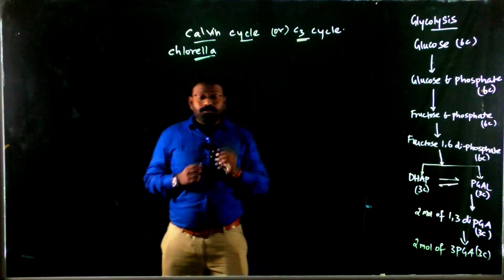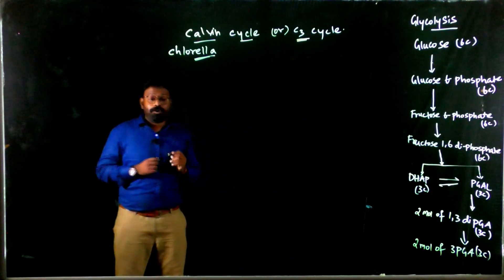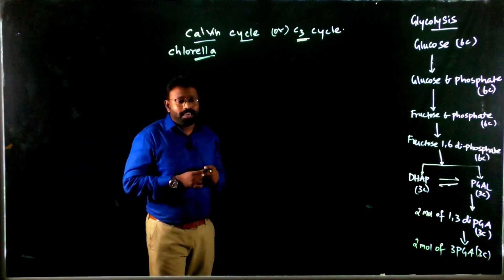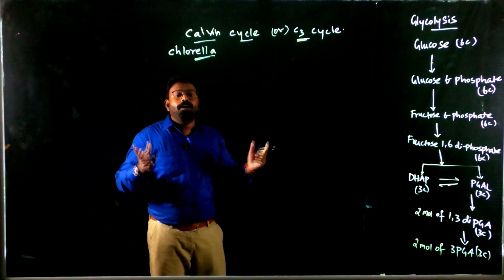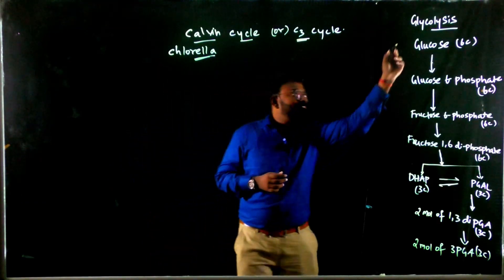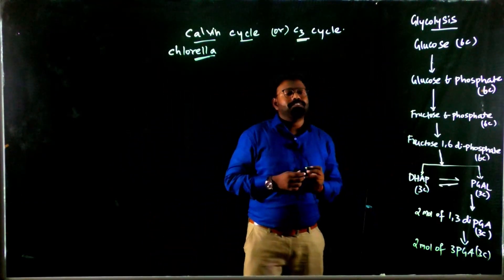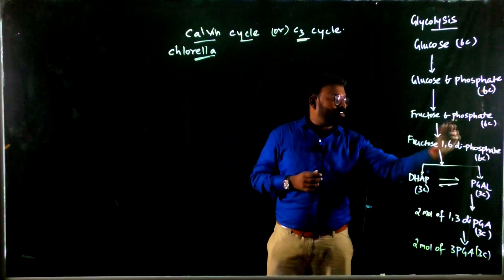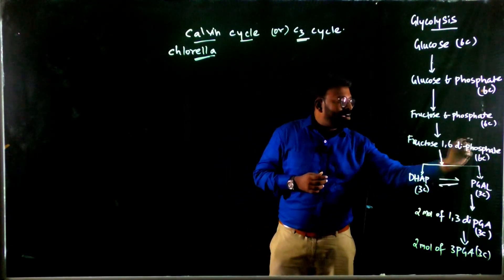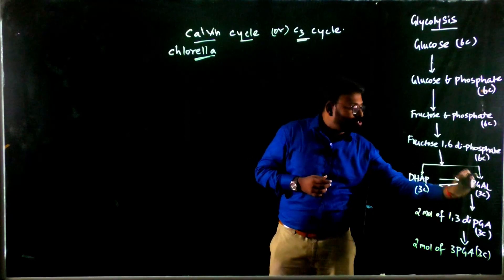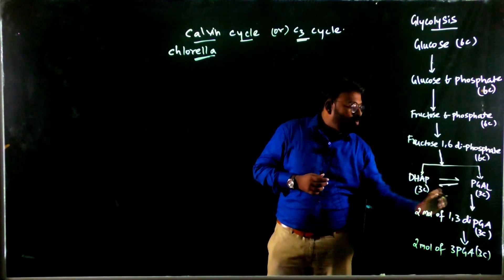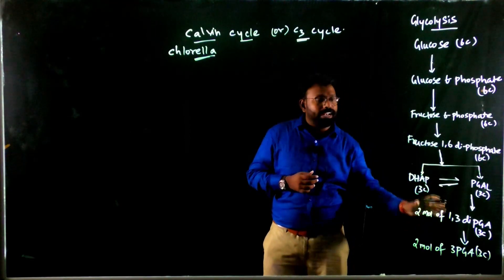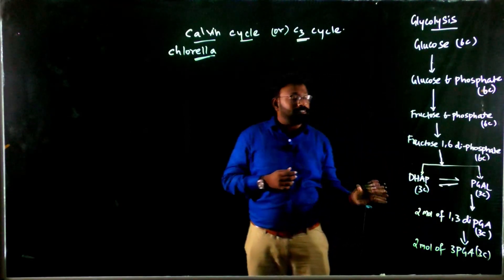Before getting into this pathway in depth, you should have an overview of the glycolysis pathway's major steps: glucose → glucose 6-phosphate → fructose 6-phosphate → fructose 1,6-bisphosphate → dihydroxyacetone phosphate → phosphoglyceraldehyde → 1,3-bisphosphoglyceric acid → 3-phosphoglycerate. This is the outline of glycolysis major steps.